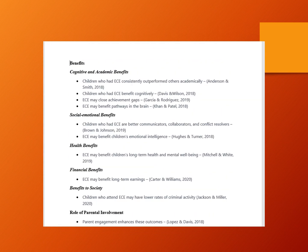Moving on in the outline, still under review of the literature, we get to another section called benefits — the benefits of early childhood education. You can see cognitive and academic benefits, social-emotional benefits, health benefits, etc., each with bullet points summarizing what we want to say. Notice that 'benefits' is a second-level heading, so it's left-justified. The ones in italics underneath are third-level headings, so we italicize those but still left-justify them.